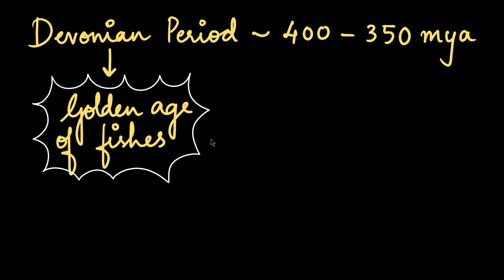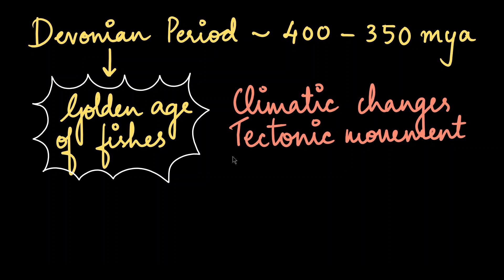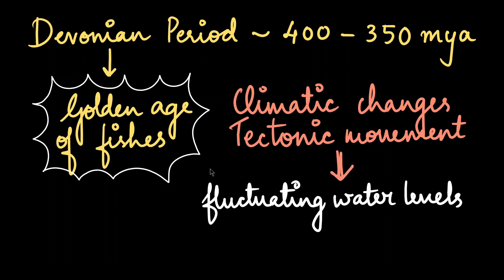Devonian period was also undergoing a lot of other changes. So there were climatic changes, temperatures were increasing, and there were extensive tectonic plate movements. Both these led to fluctuating water levels all over the globe.